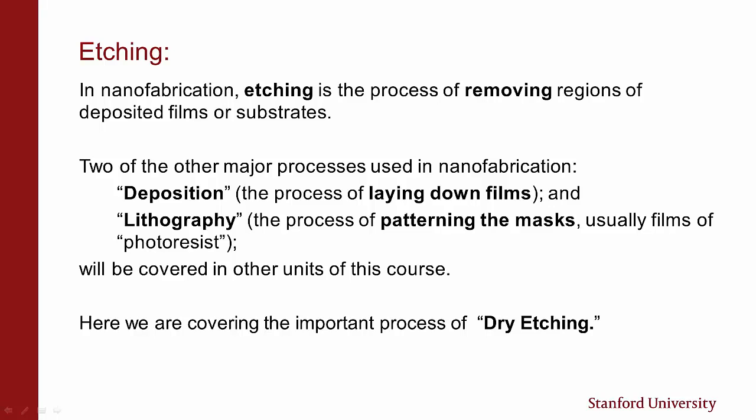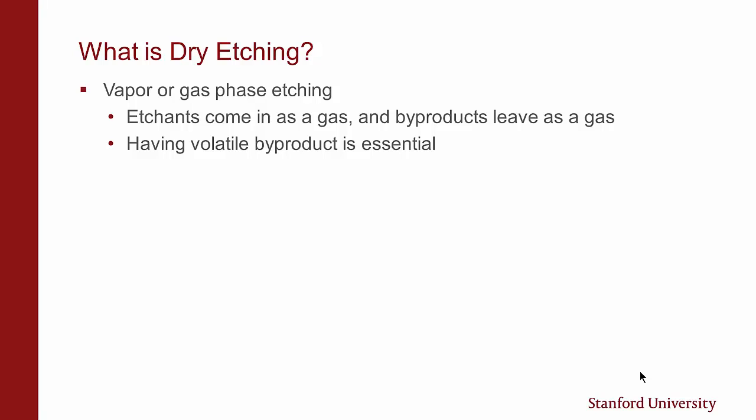In nanofabrication, etching is the process of removing regions of deposited films or substrates. Two of the other major processes used in nanofabrication — deposition, the process of laying down films, and lithography, the process of patterning films of photoresist — will be covered in other units of this course. Here we are covering the important process of dry etching. Basically, dry etching is vapor or gas-based etching. Etchants come in as a gas and byproducts leave as a gas, so having a volatile byproduct is essential for dry etching.